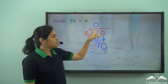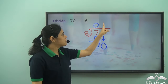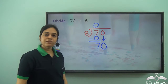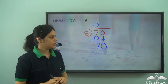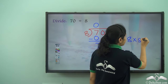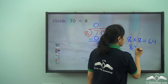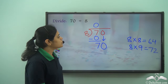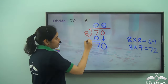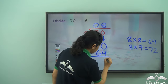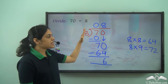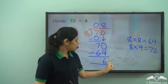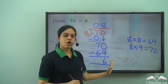Remember, I need to write this 0 above 7 to ensure that the quotient I am getting is correct. Now I have 70 here. How many times does 8 go into 70? 8 into 8 is 64 and 8 into 9 is 72. 72 is greater than 70, so 8 goes into 70 eight times. 8 into 8 is 64 and I subtract it to get 6. Now 6 is less than 8, so I cannot divide 6 by 8.